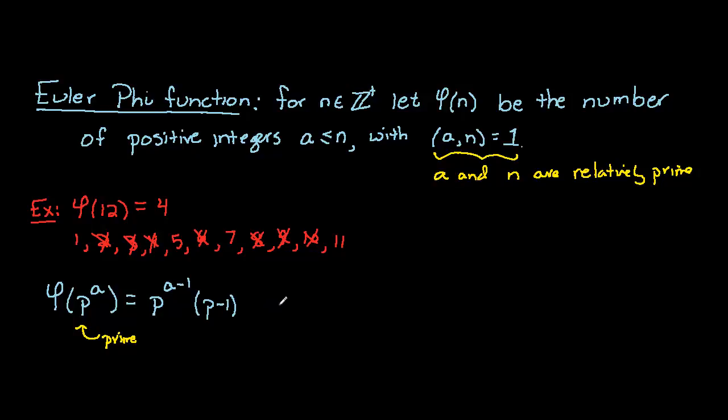We'll also note that the Euler phi function is multiplicative, in the sense that phi of a times b is the same as phi of a times phi of b.